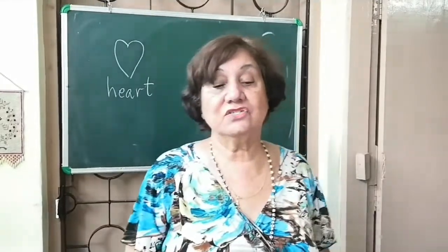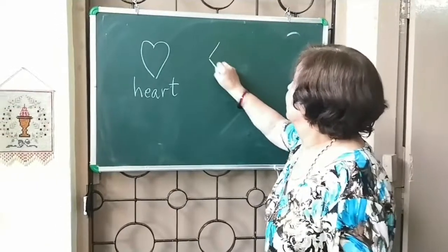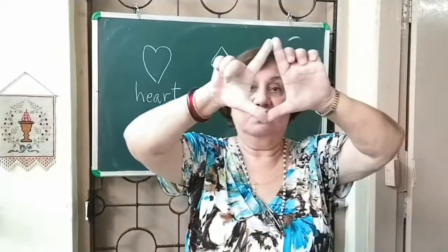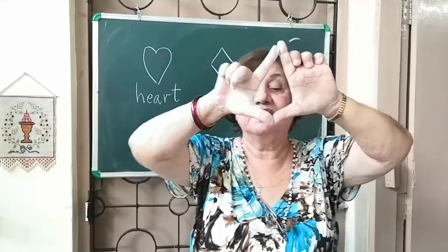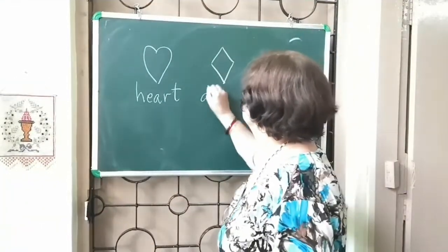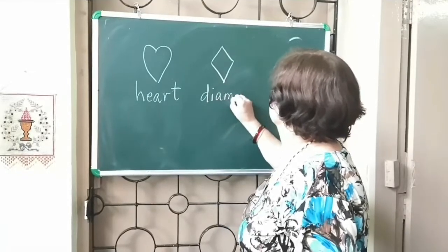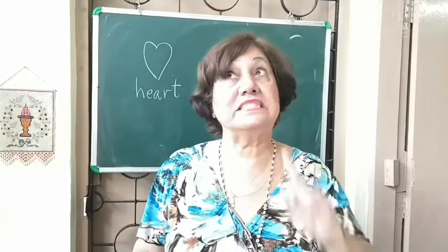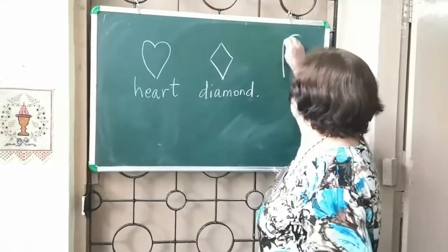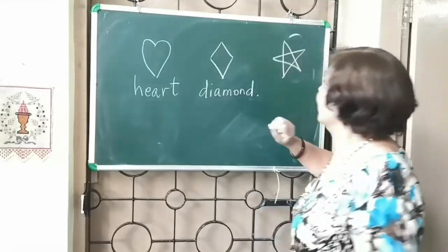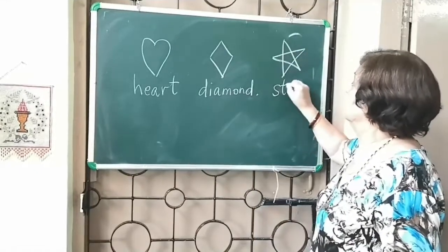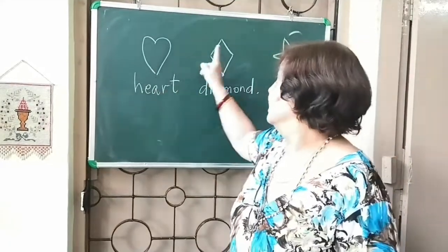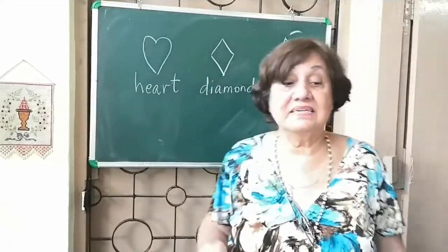The second thing that you know and that is a, what is this? This is a diamond. The third thing you know, you see it in the sky and they are, can you tell me, stars. So this is a star. So we have seen a heart, a diamond and a star.